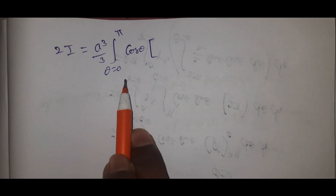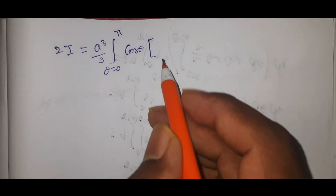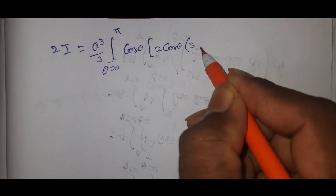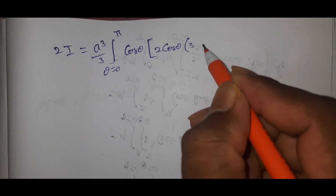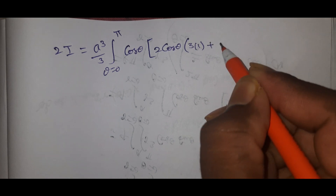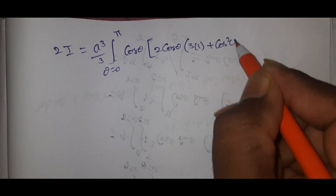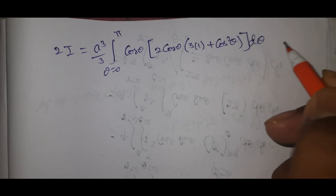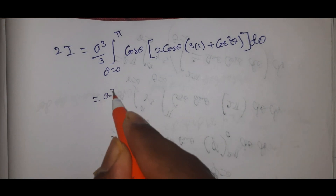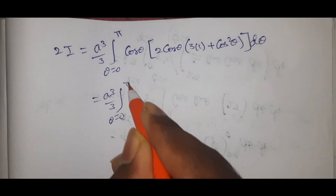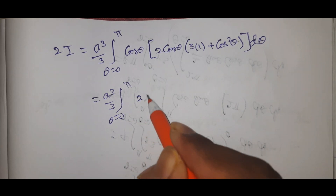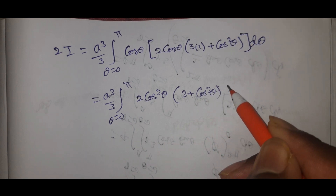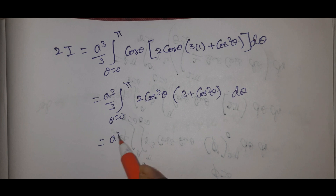So 2I = a³/3 · integral from 0 to pi of cos θ · [2 cos θ · (3 + cos² θ)] dθ = a³/3 · integral from 0 to pi of (6 cos² θ + 2 cos⁴ θ) dθ. Applying the symmetry property for even functions over [0, π], we write 2I = 2 · integral from 0 to π/2 of (3 cos² θ + cos⁴ θ) dθ.